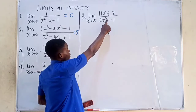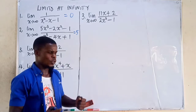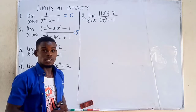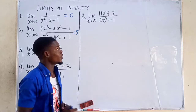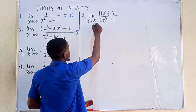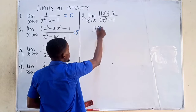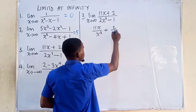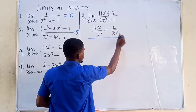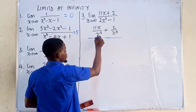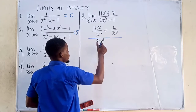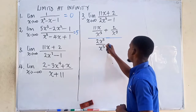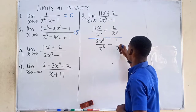In the denominator, we have x to the power 3 as the dominant term — the term with the highest degree. So we divide the numerator and denominator by x raised to the power 3. The numerator becomes 11x over x³ plus 2 over x³, and the denominator becomes 2x³ over x³ minus 1 over x³.